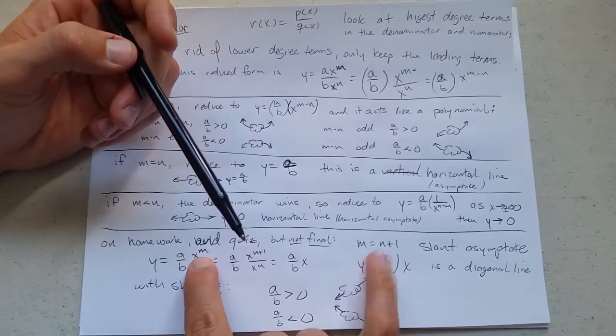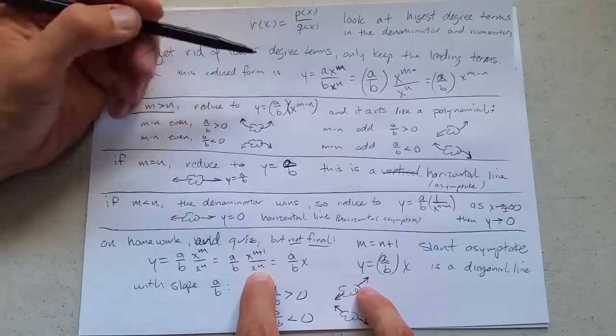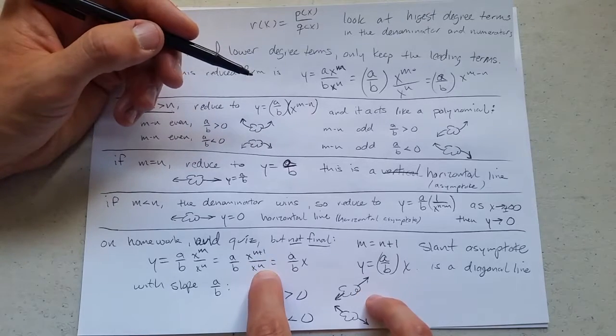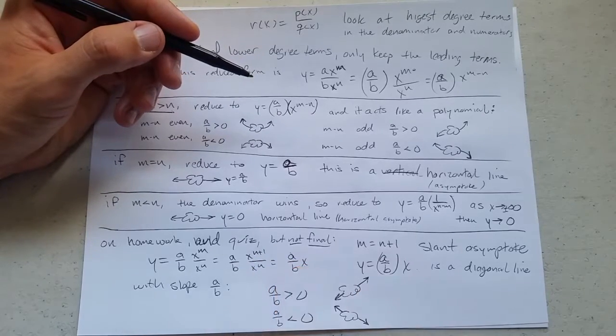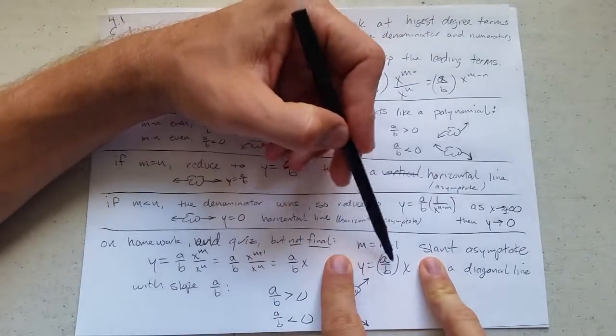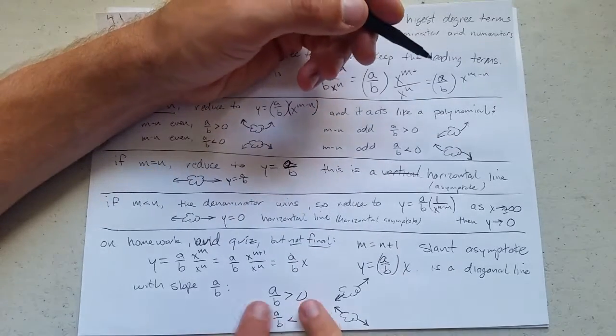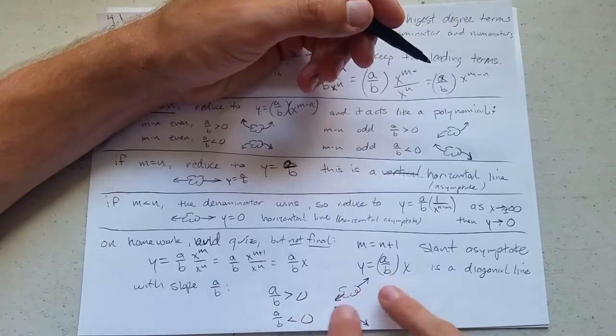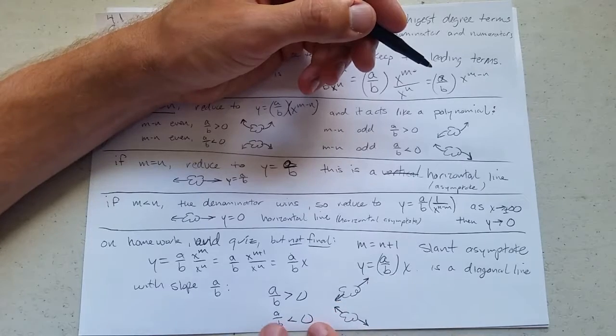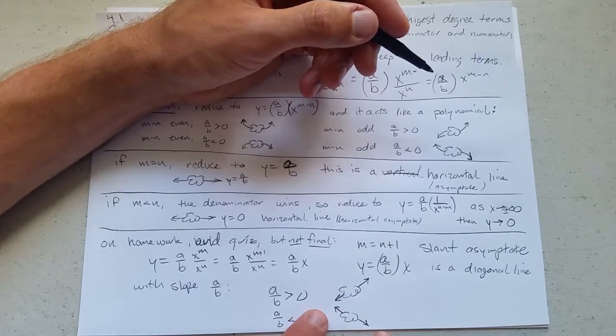You can write m as n plus one, and then you reduce this down, subtract the powers, and you have one more x on top, so it reduces to a over b times x. What is this right here? Y equals a number times x. This is a line, and the slope is a over b. If a is positive, you have an increasing line. If a over b is positive, increasing line. A over b is negative, you have a decreasing line.